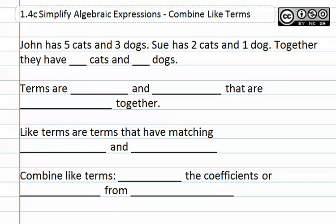We would first look at how many cats John has, which is five cats. We then would look at how many cats Sue has, which is two cats.